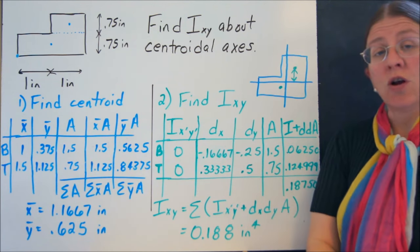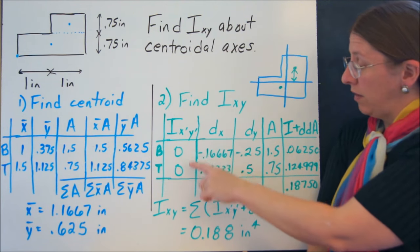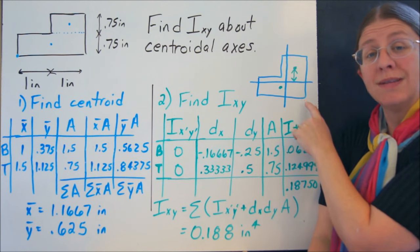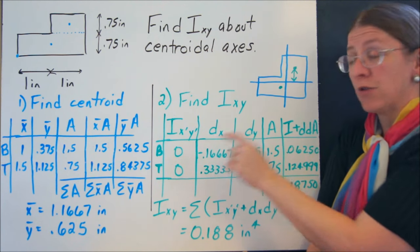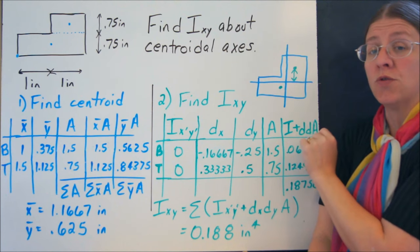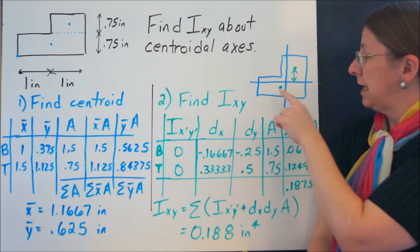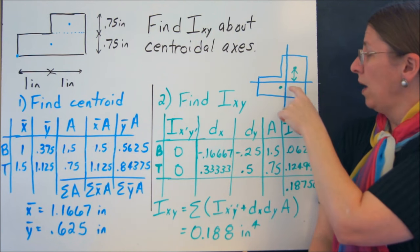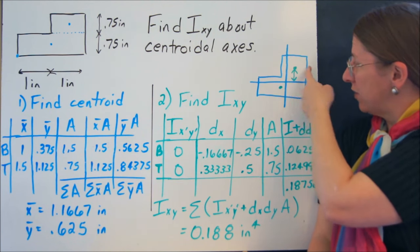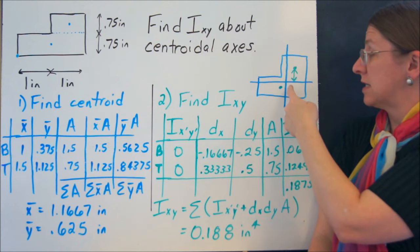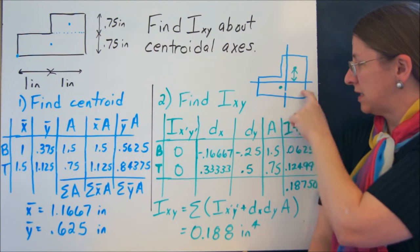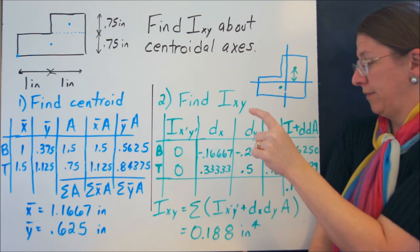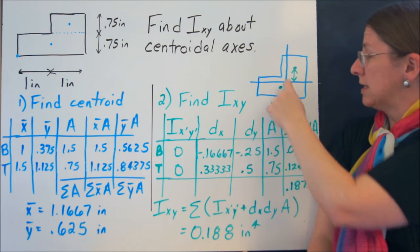Now, when I go to fill out the chart for Ixy, these are zero because I had it broken up into two rectangles. Each of them are symmetric about their own centroidal x or y axes. dx is the distance between this x axis and each of the, well, dx is going to be the distance between the y axis, this distance, the x distance between that point and this line, or this point and that line. dy is the other two.